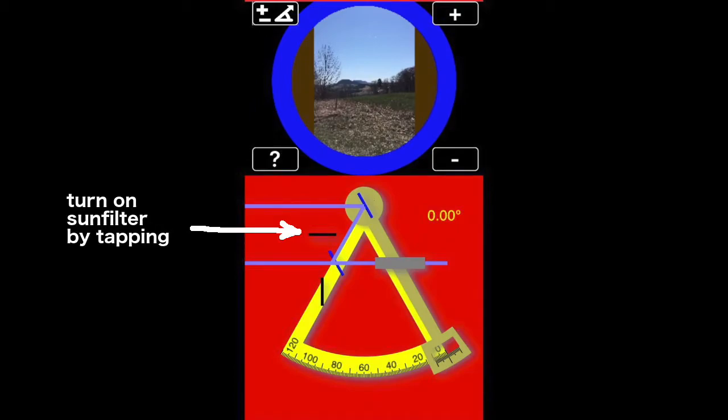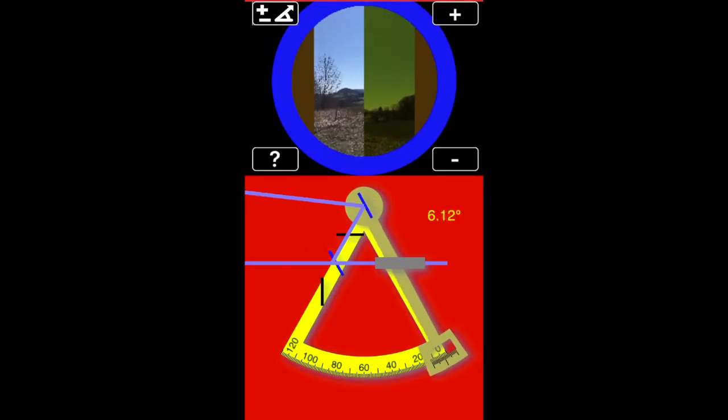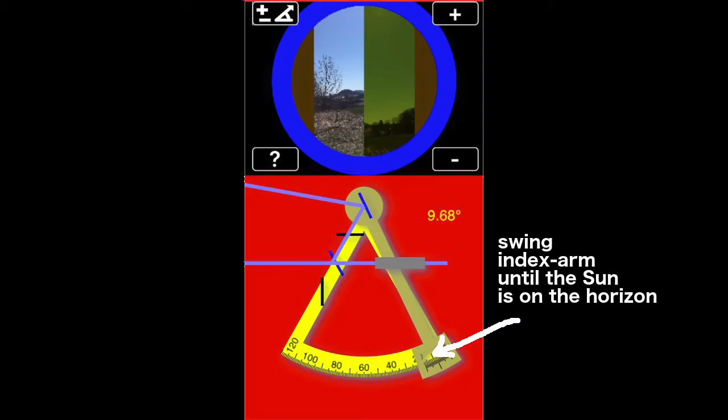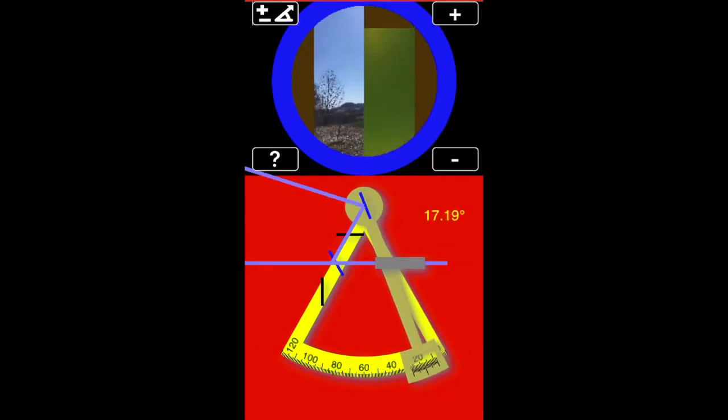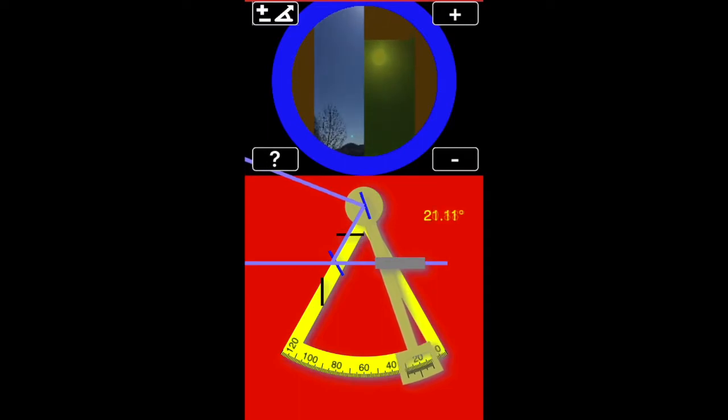First turn on the sun filter by tapping it. Now swing the index arm until the sun is on the horizon. You do this by dragging it with your finger.